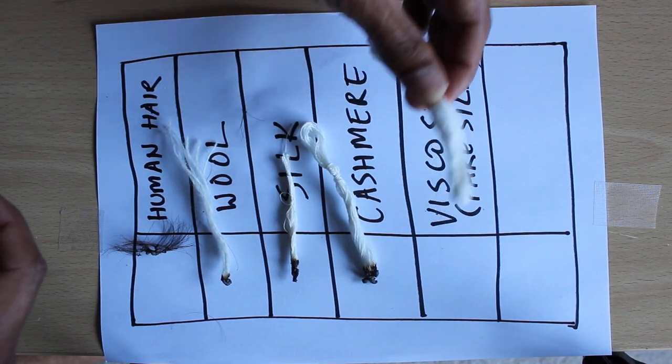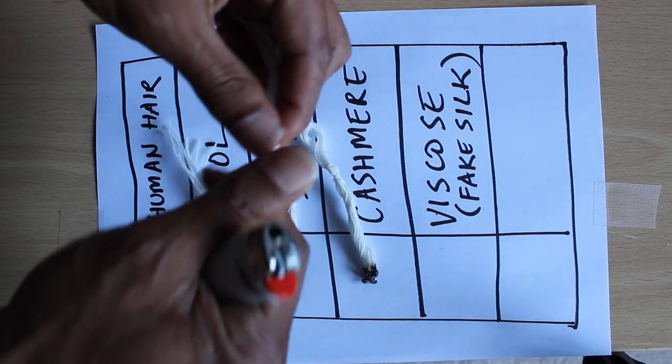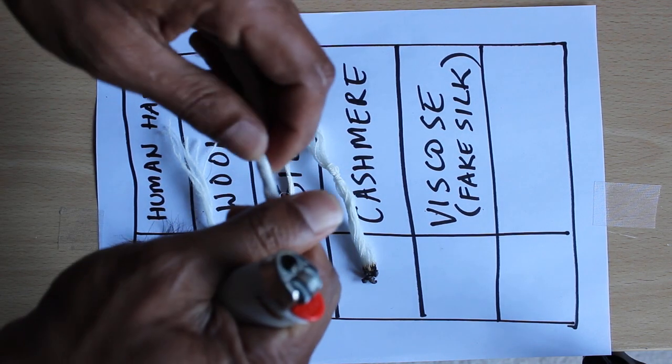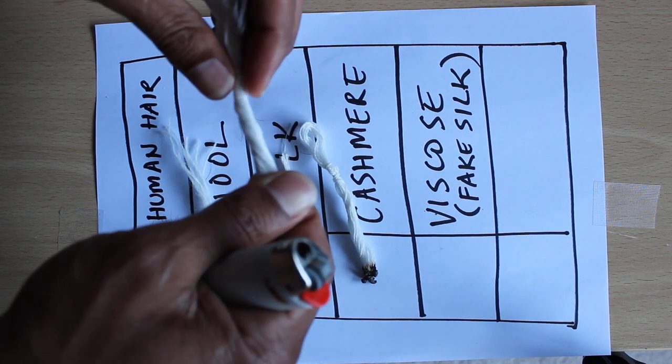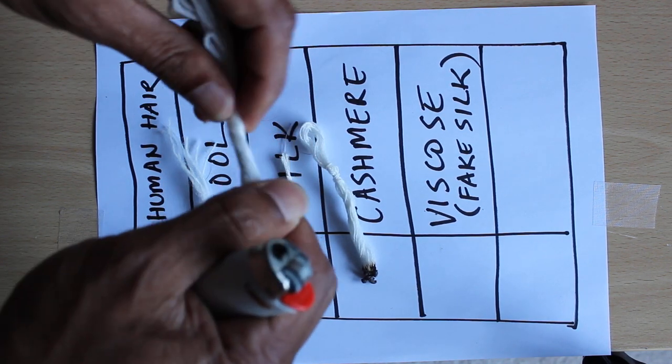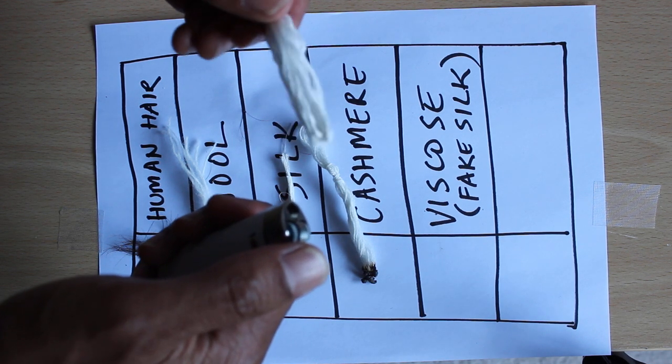I'm going to try the viscose or fake silk. It's very commonly used on cheap products and a lot of rugs where you find it a bit cheap on the market.